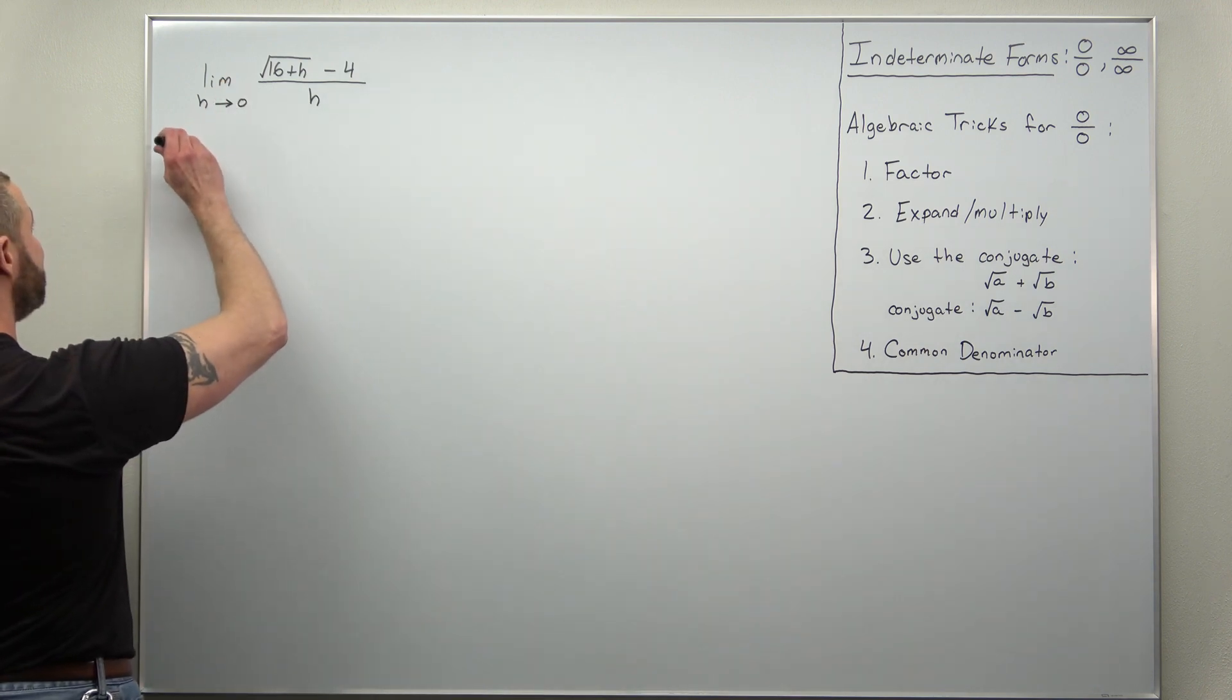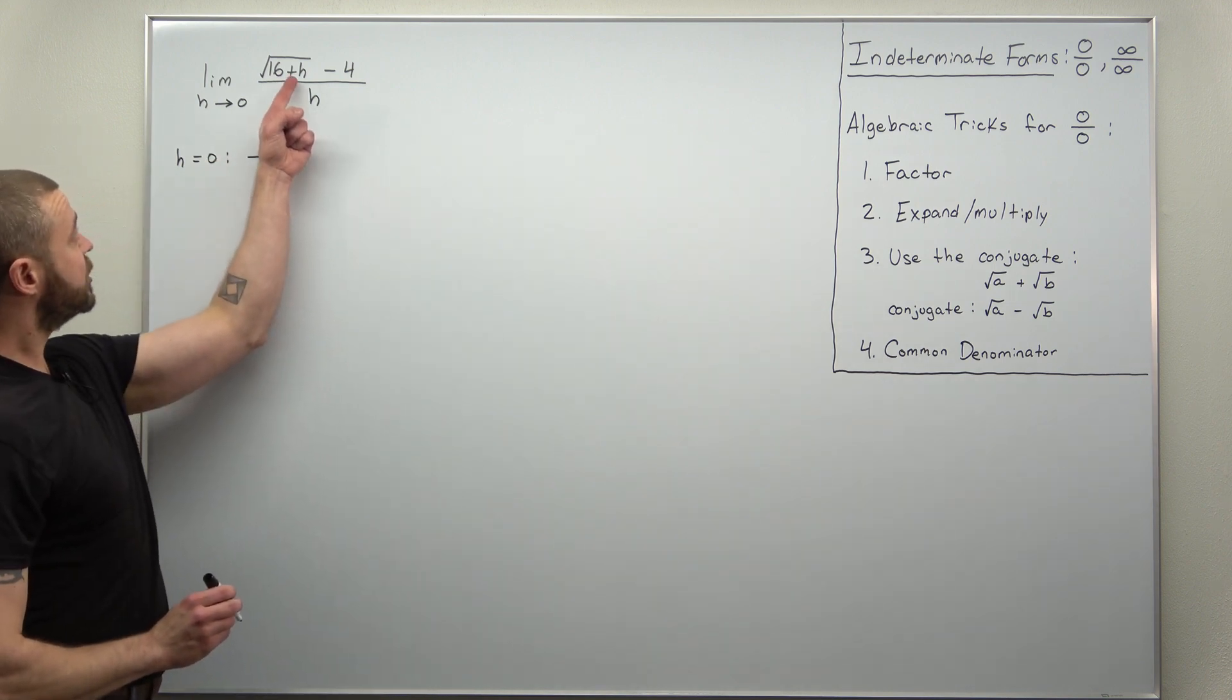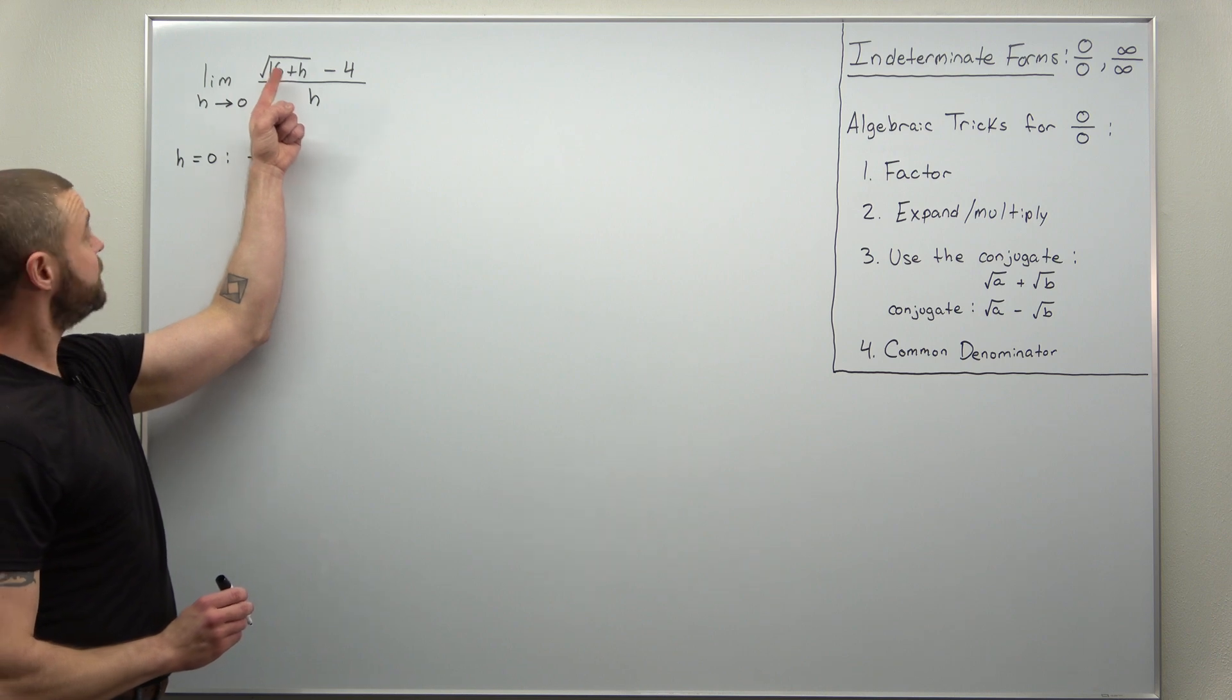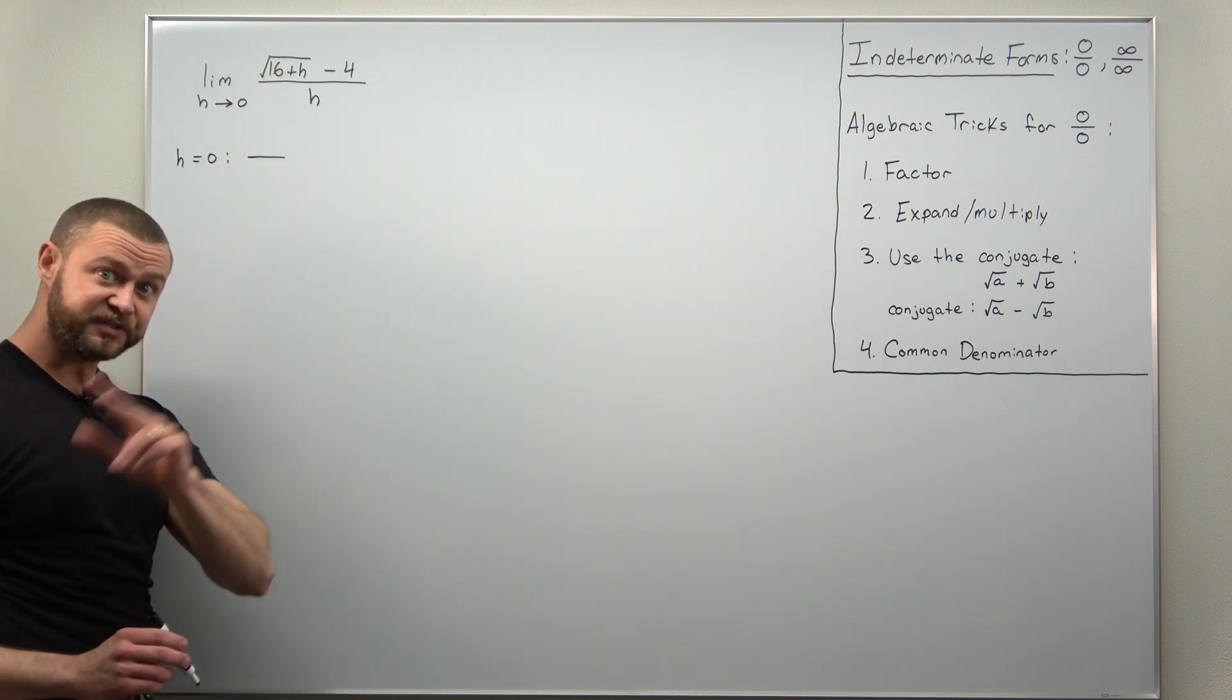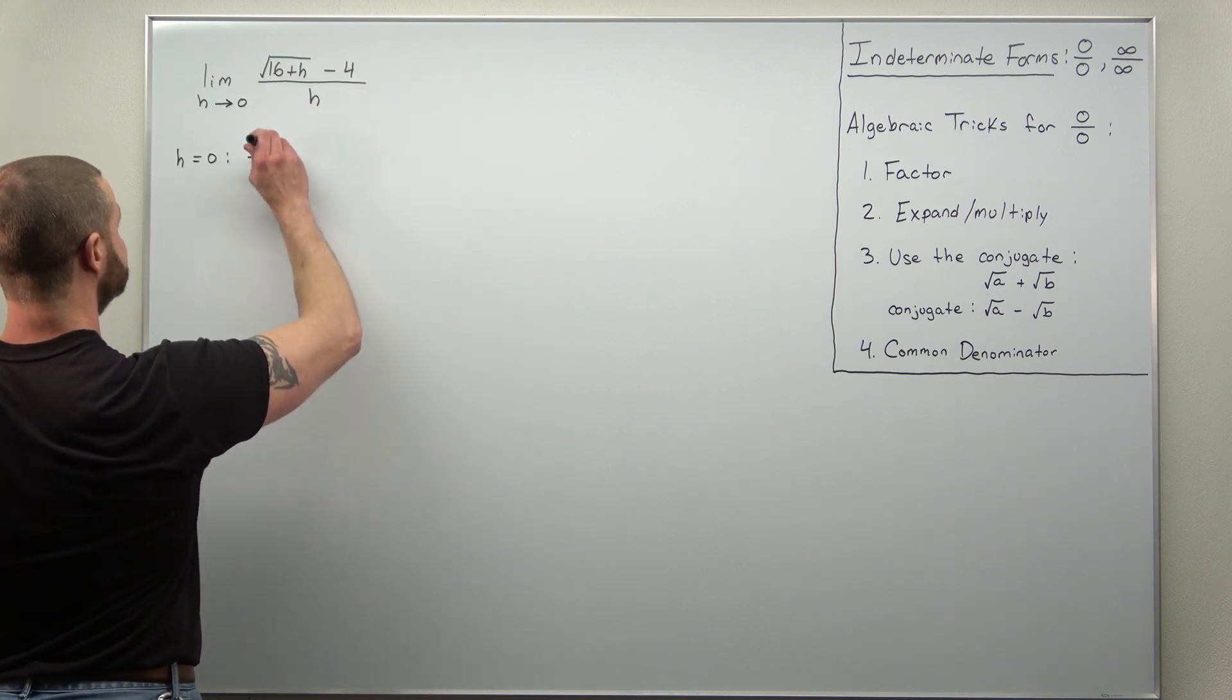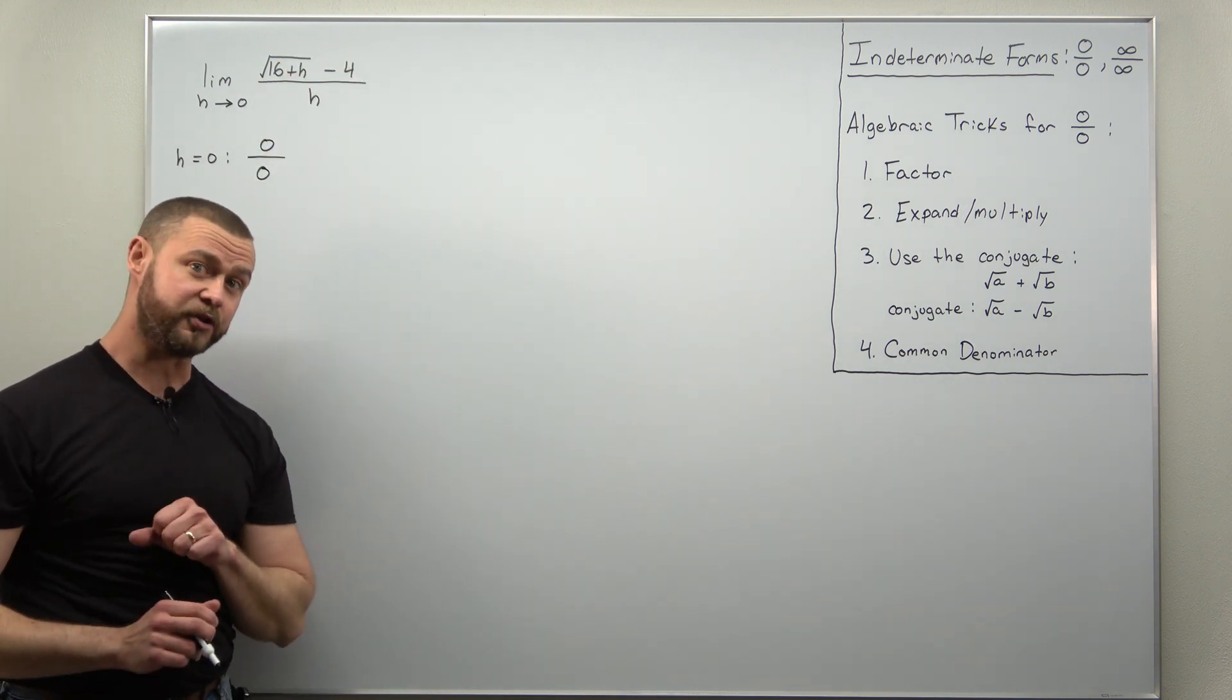We're going to plug in h equal to 0, and notice h occurs in the numerator inside that square root, so you'll get 16 plus 0. Square root of 16 is going to be 4 minus 4, you get 0 over 0, so we have an indeterminate form.